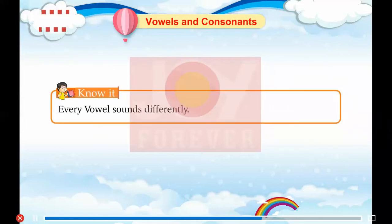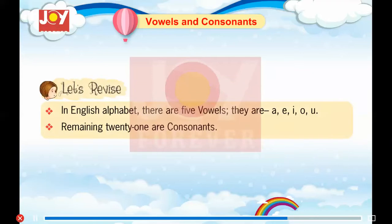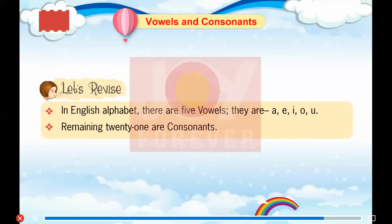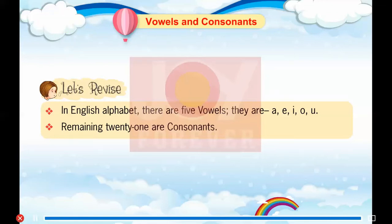Know it? Every vowel sounds differently. Let's revise. In the English alphabet, there are 5 vowels: A, E, I, O, U. The remaining 21 are consonants.